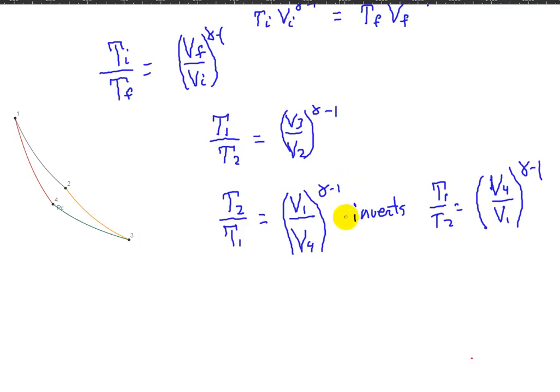So this gives us the rather interesting result that V3 over V2, which is this term up here is T1 over T2. V4 over V1, this one down here is T1 over T2. That sort of means that V3 over V2 must be equal to V4 over V1. Or you could invert these, and then that would be V4 over V3 is equal to V1 over V2. Now that is beginning to get us somewhere.